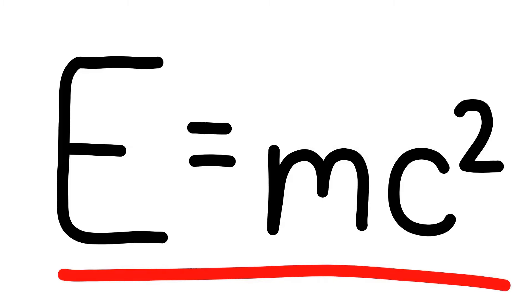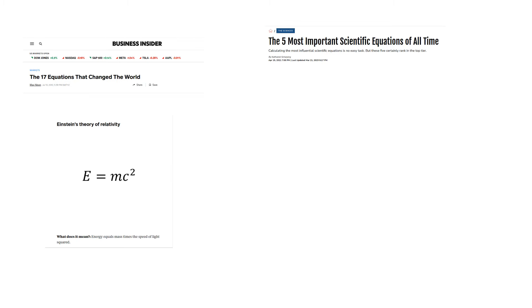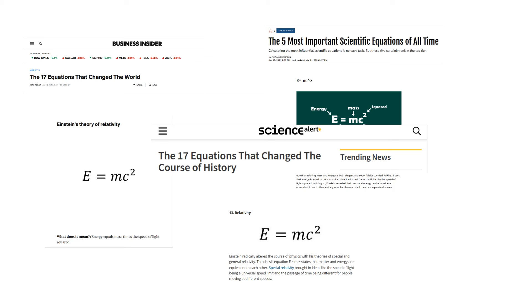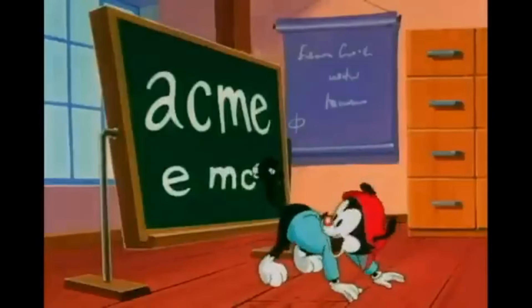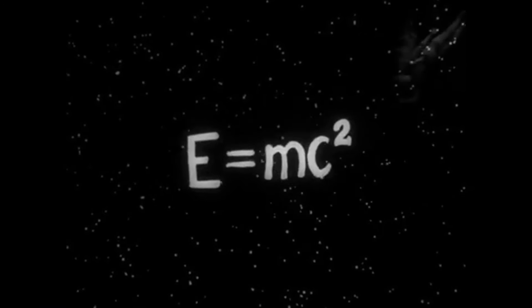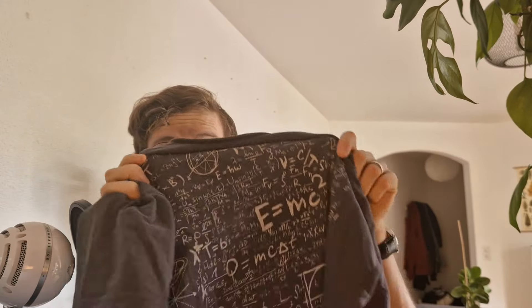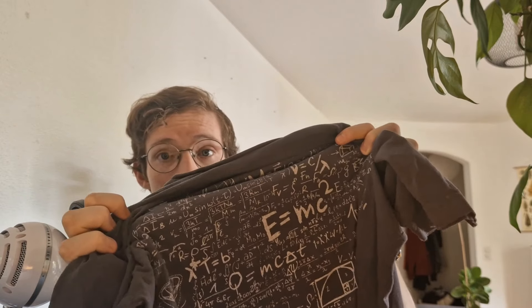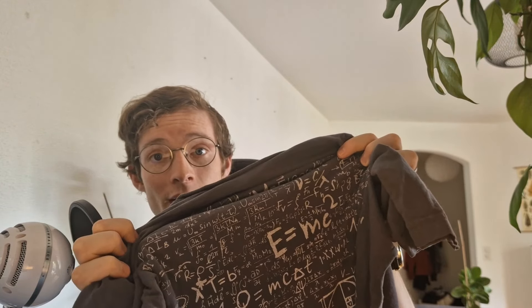In fact, pretty much any list of the most famous or most important equations of all time include this equation, usually describing it as some variant of the most famous equation of all time. And there are countless pop culture references to this equation. Even here on this shirt of my wife's with loads of mathematical and physical equations, there it is, E equals mc squared right front and center.